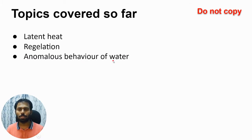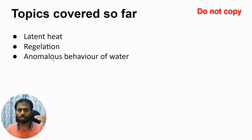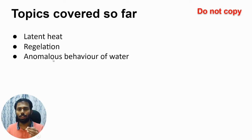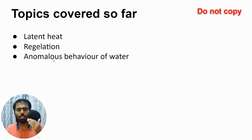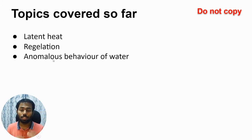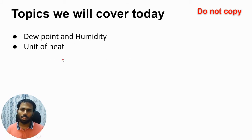Finally we looked at the anomalous behavior of water. Anomalous means abnormal — not normal. Generally for liquids, when you increase temperature their volume also increases, but in the case of water between 0 to 4 degrees Celsius, if you increase the temperature the volume decreases instead of increasing. After 4 degrees Celsius the volume normally increases. So between 0 and 4 degrees Celsius, the behavior of water is called anomalous behavior of water.